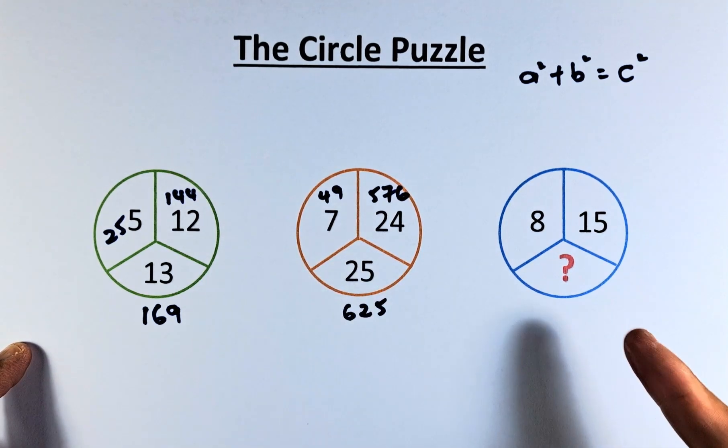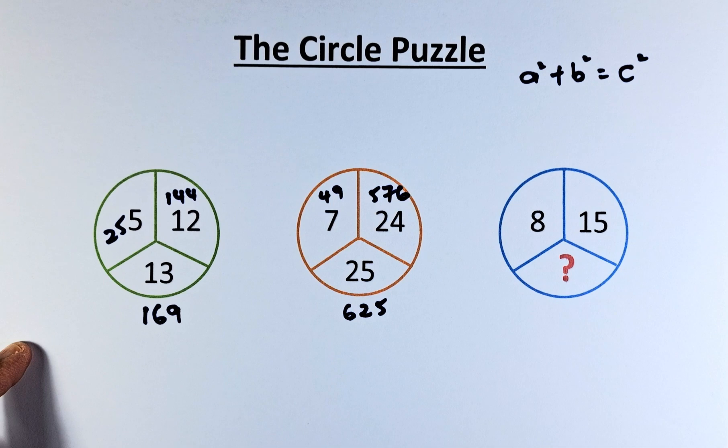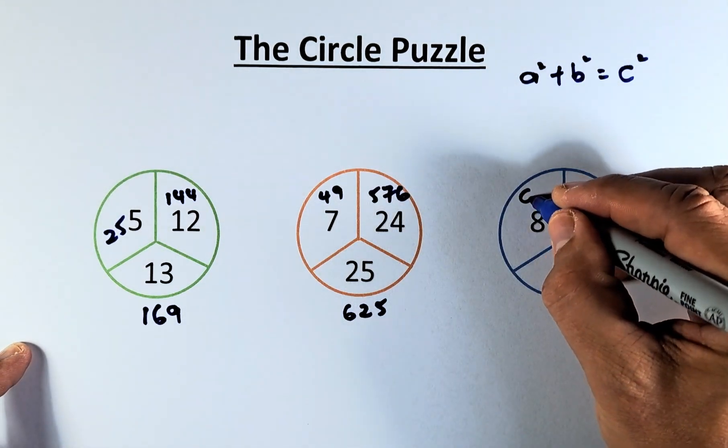So in our last circle, we have 8, 15, and a question mark. We're going to do the same thing. 8² is 64.